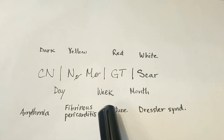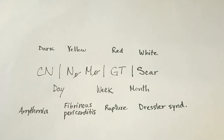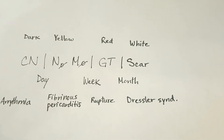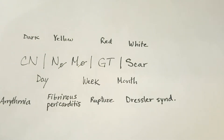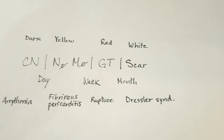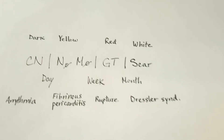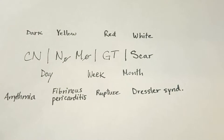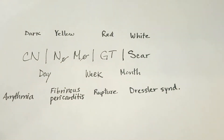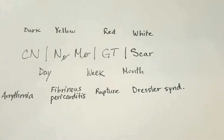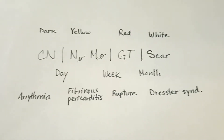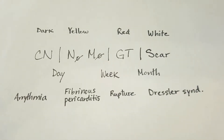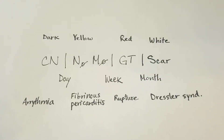Within a week to a month, you're going to see granulation tissue being laid out, and that's going to give a red border appearance around the infarct of the heart. That is because you're laying down connective tissue and bringing in tiny vessels to recanalize and revascularize that area to prepare it for healing.